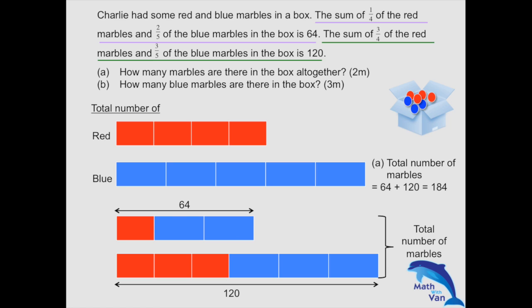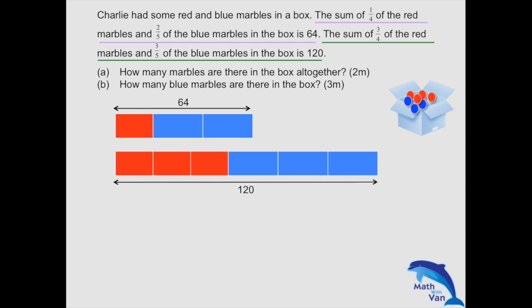So now, how do we find out the number of blue marbles for part B? First thing first, you must understand the concept, similar to your simultaneous equation. And in that, think of your science experiment, whereby, in all experiments, there can be only one unknown, one variable, that can be kept different.